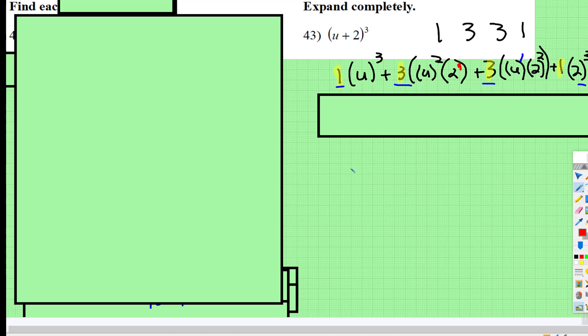So 1 times u cubed is just u cubed. This is 2 to the first. 2 to the first times 3 is 6, u squared.